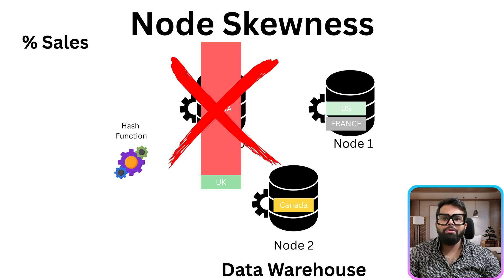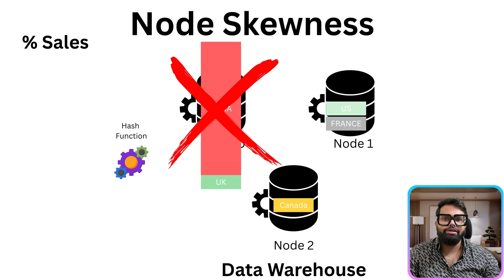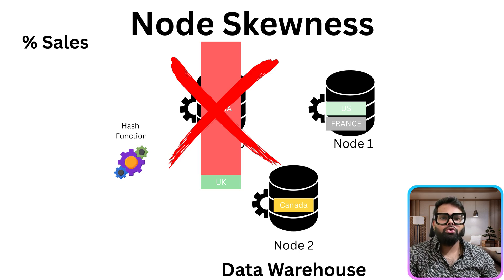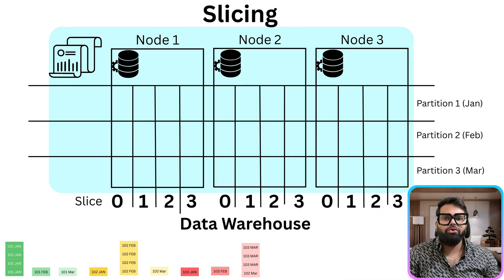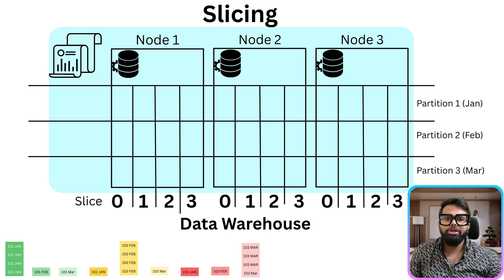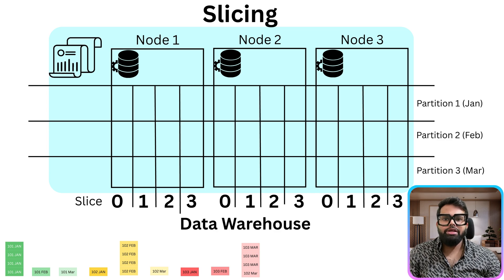You now understand how data is distributed across nodes in a data warehouse — but the story doesn't end at the nodes. Each node is further broken down into smaller units to push parallel processing to an even higher level. This is where the real power of the data warehouse kicks in. Each node contains multiple slices: lightweight compute units with their own CPU and memory. Think of them as mini workers inside a node, each capable of processing its own chunk of data independently.